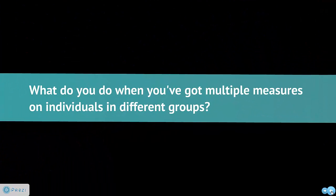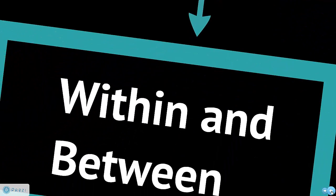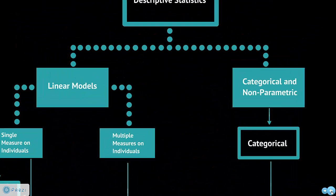But sometimes we've got multiple measures on individuals who are in different groups. Well, what do we do then? Well, for this, we've got what's called a within and between analysis, or what Field calls a mixed analysis. And so that's just a variation on the repeated measures, but it also uses the methods that we used with the ANOVAs. So it's just a variation on the same thing we've already covered.